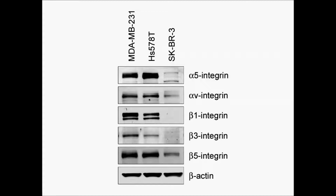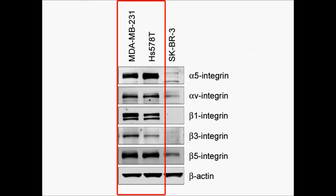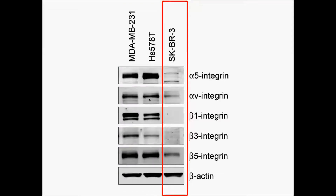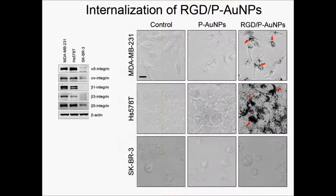In our study, three kinds of metastatic breast cancer cell lines were used. The first two cell lines show integrin overexpression and another one shows low integrin expression. After incubating the cells with gold nanoparticles, we can see an obvious internalization of RGD-conjugated gold nanoparticles in integrin-expressing cells, but poor uptake in the negative control cells.